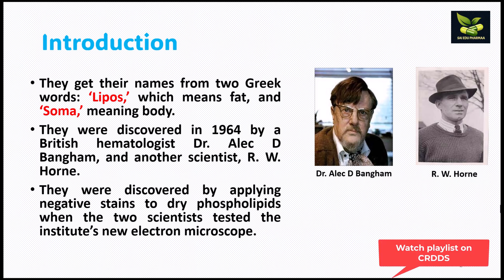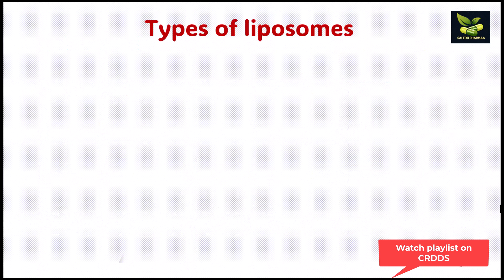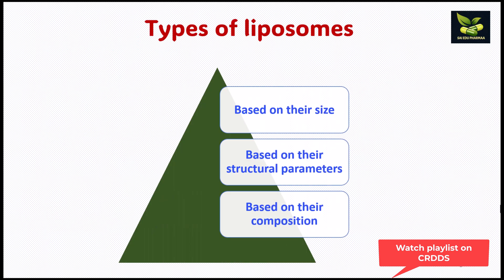As in the previous video, we had seen that liposomes came from the word 'lipos' which means fat and 'soma' which means body. These are vesicular drug delivery systems and they are basically formed of phospholipids. We will be seeing what are the various types of liposomes.